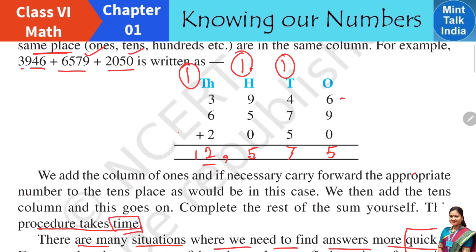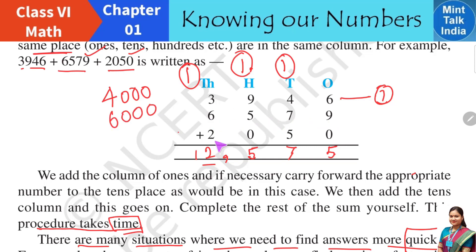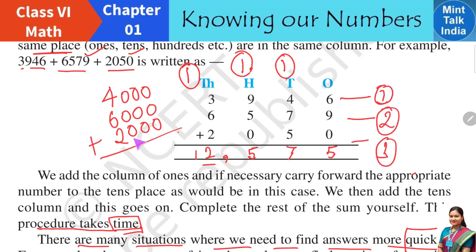For example, estimate the price of the first item: 3,946 — that means near about 4,000. The price of another item is 6,579, so we can say about 6,000. I have a total amount of about 2,050, so I can say 2,000. If we add these estimated values — 4,000 plus 6,000 plus 2,000 — we can mentally add: 4 plus 6 plus 2 is 12. So we have a total estimated amount of 12,000.